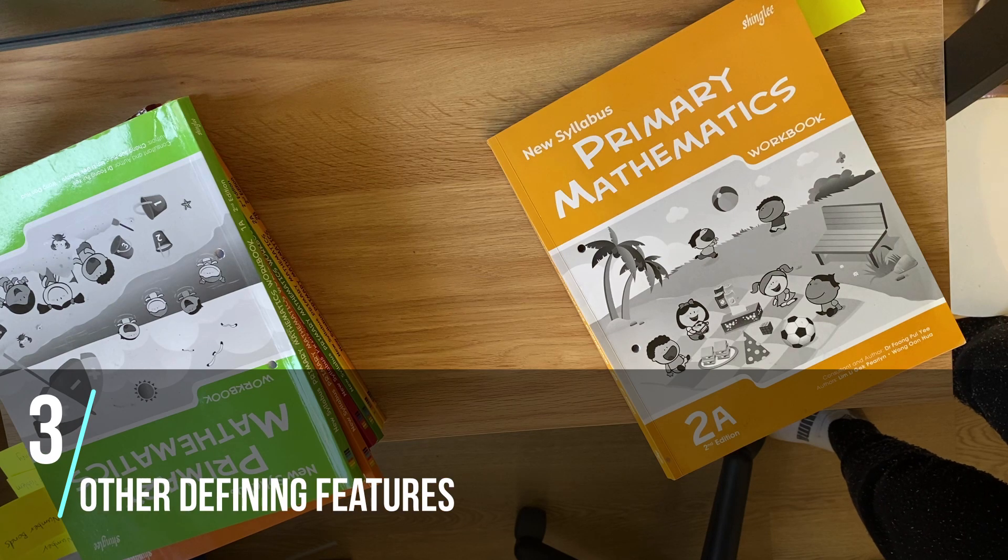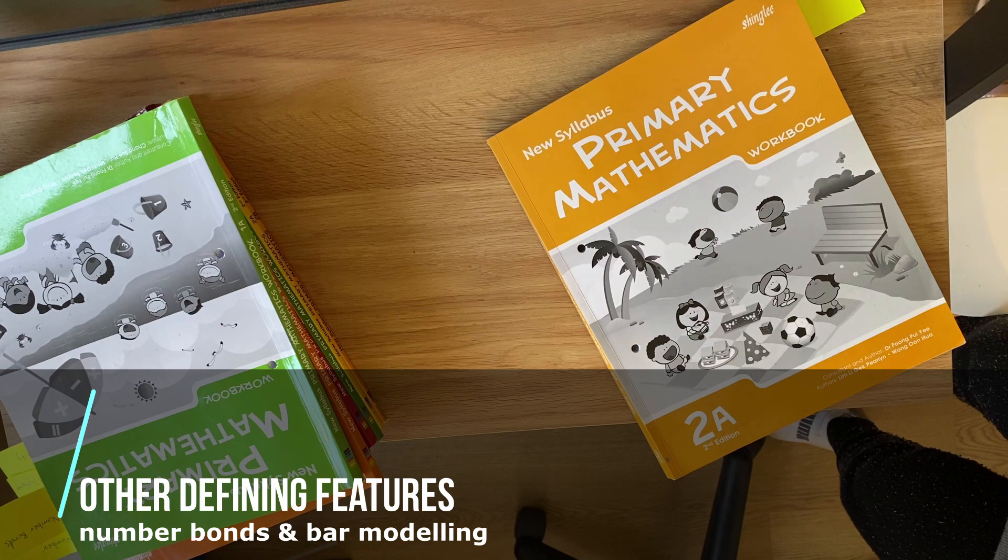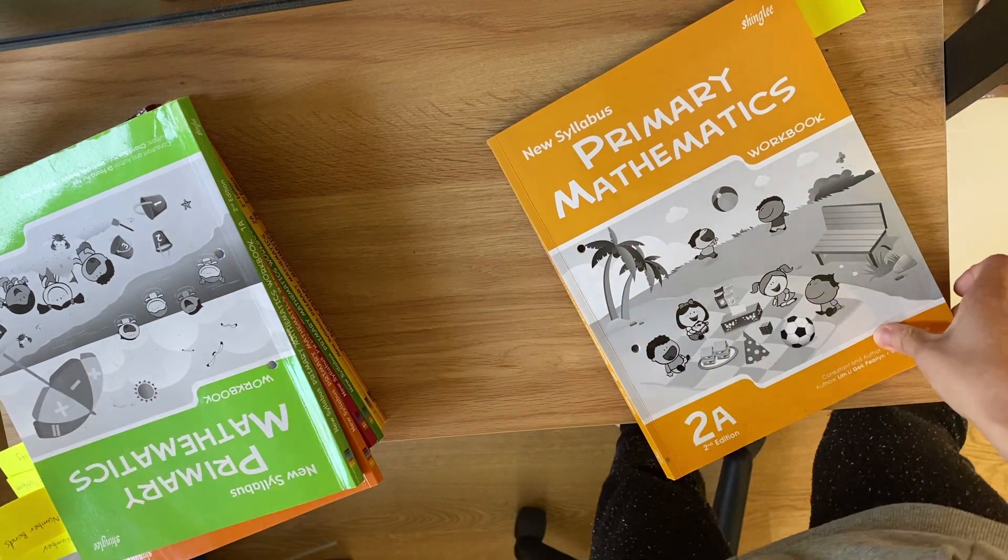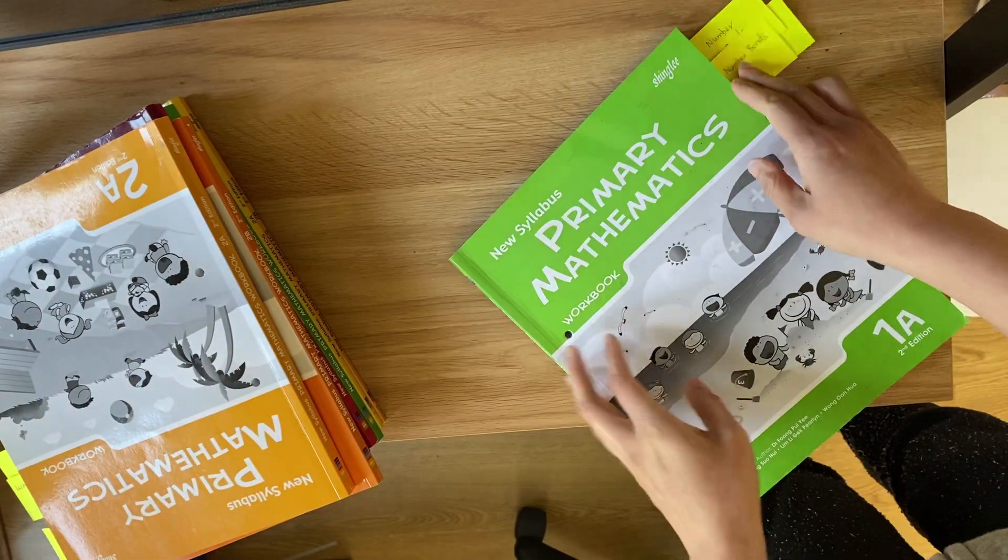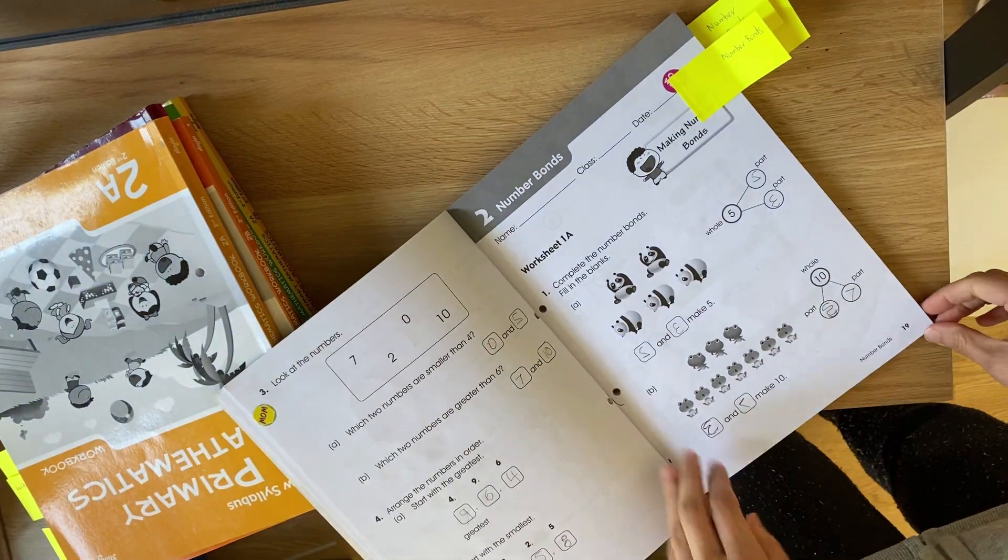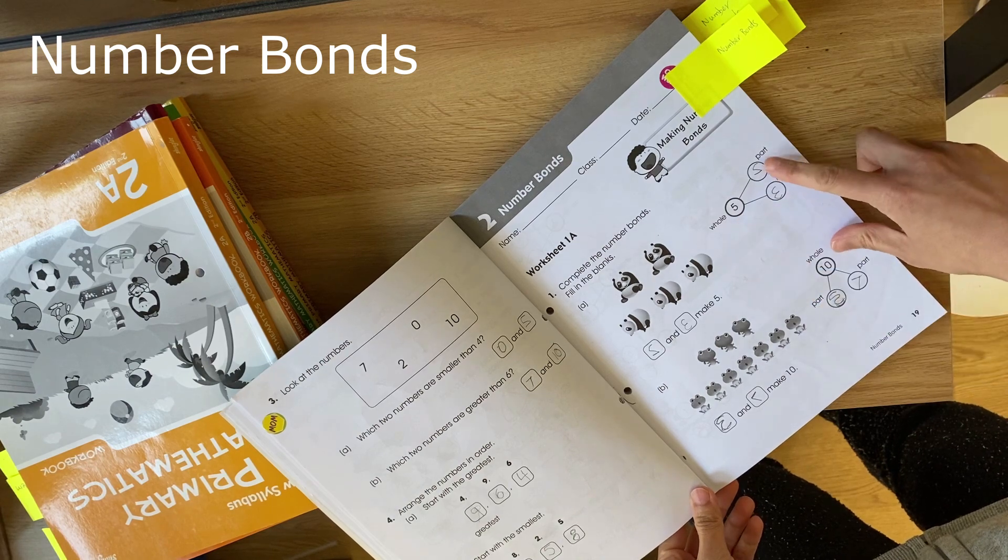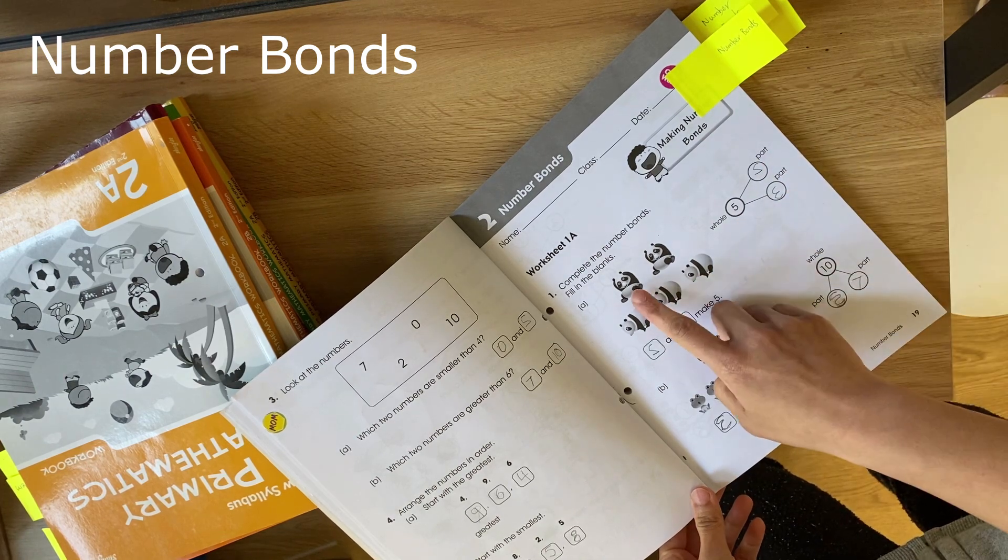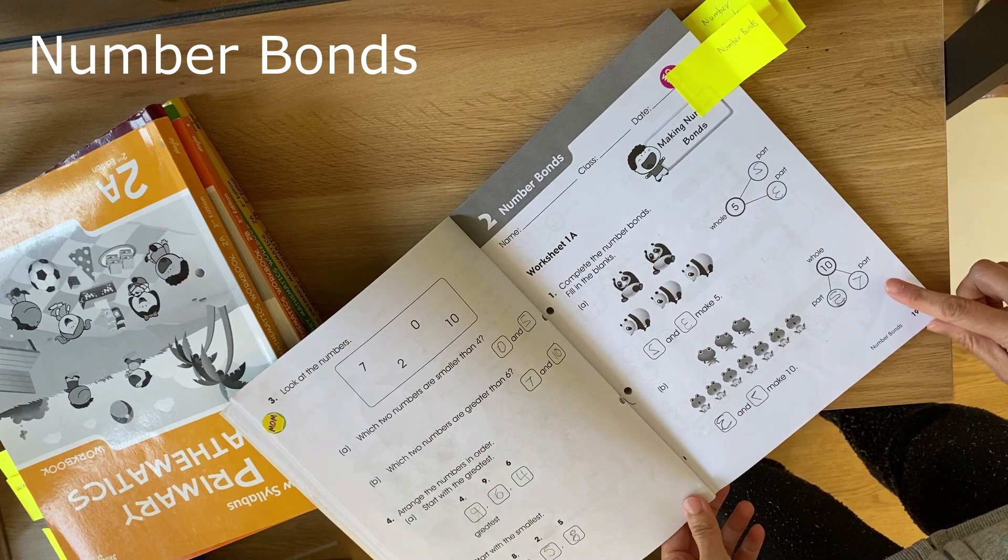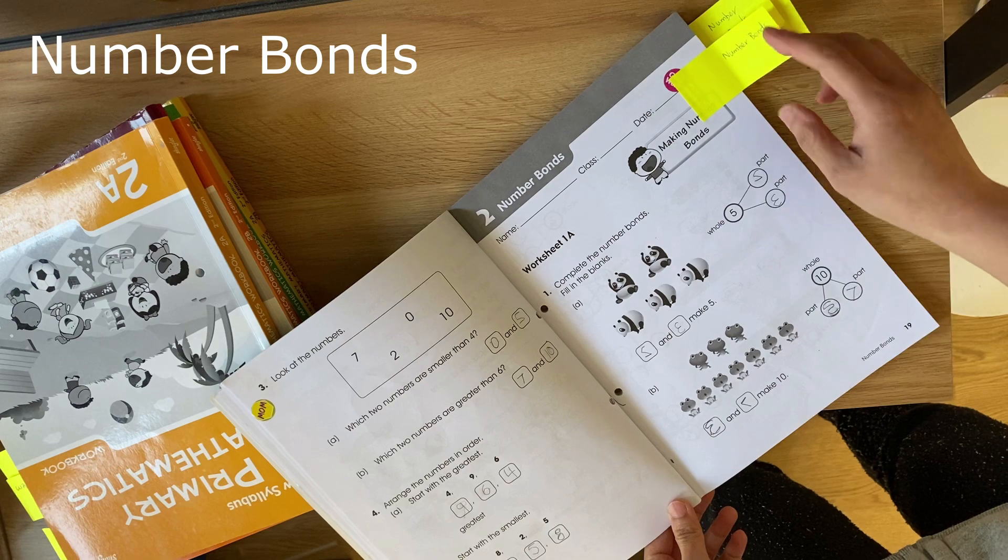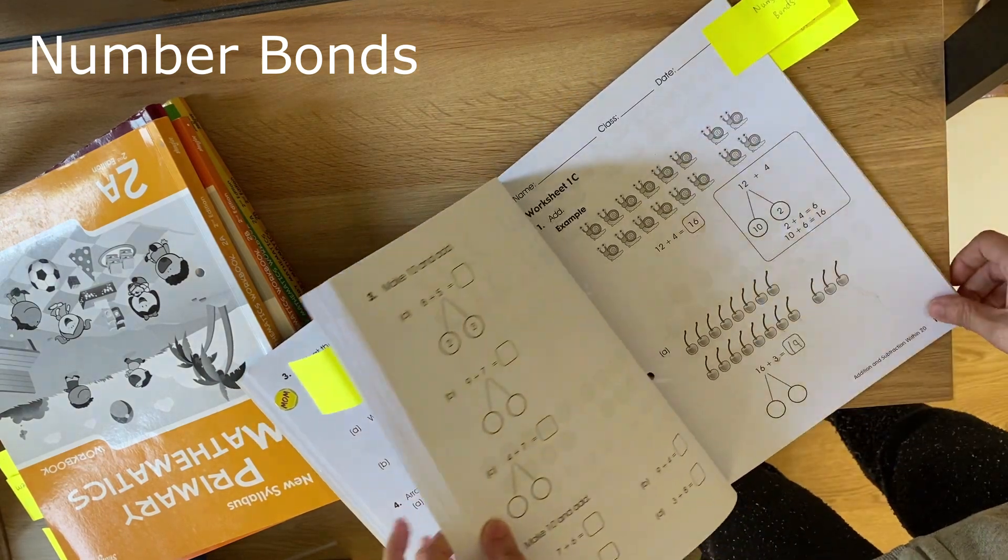The other defining features of Singapore maths is its use of number bonds and bar modelling. Let me show you what I mean by number bonds by looking at this book in level 1A. So I've got number bonds here. You've got 5, 2 and 3 make 5. I've got 2 pandas and 3 pandas. You've got 10 which can be broken up into 7 and 3. You'll then use number bonds with your subtraction and your addition.